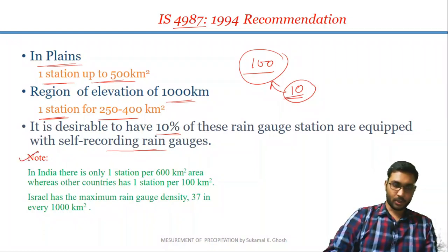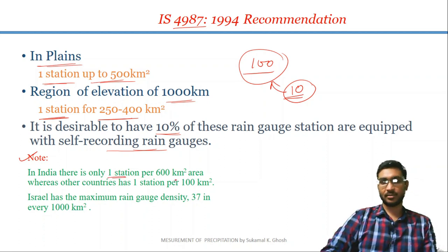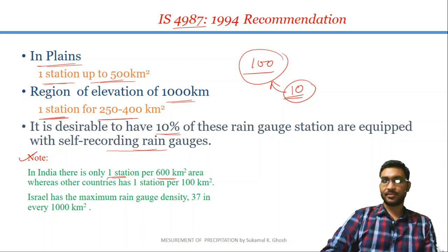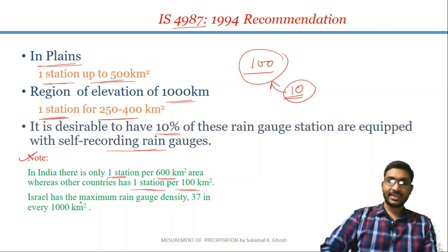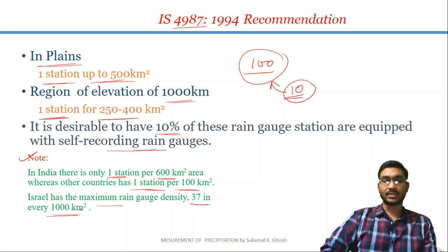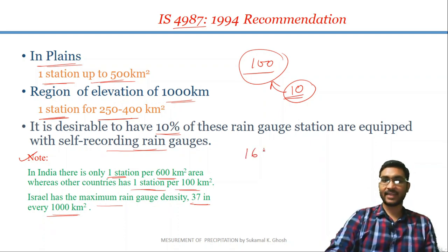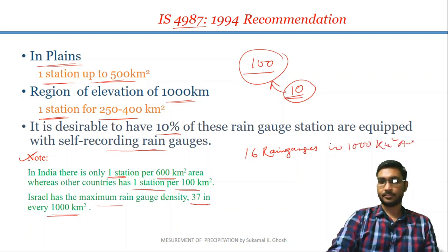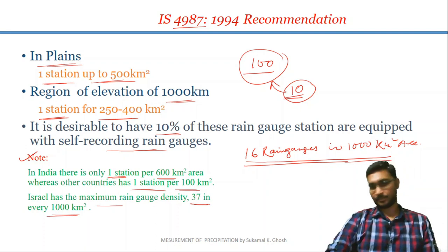An important note is that in India, there is only one station per 600 square kilometres area, which is very less compared to other countries which have one station per 100 square kilometres. Israel has the maximum rain gauge density — 37 stations in every 1000 square kilometres. Whereas India has only 16 rain gauges per 1000 square kilometres, which is comparatively less.